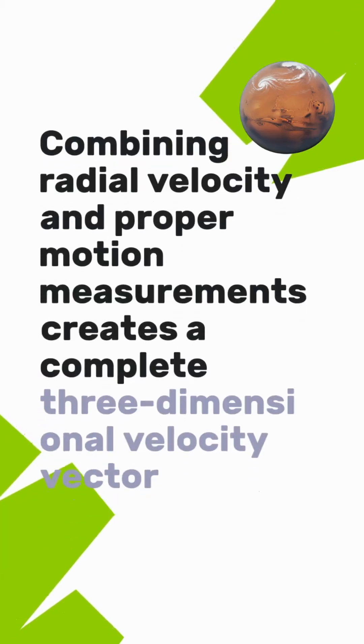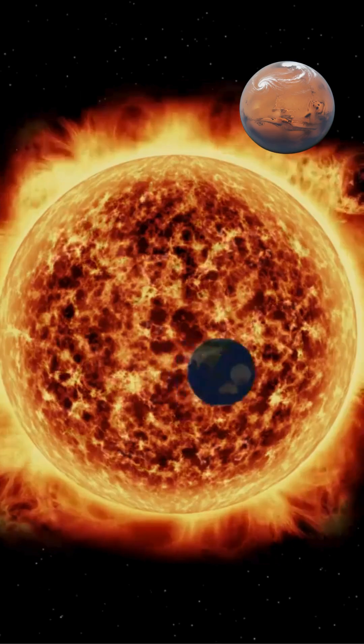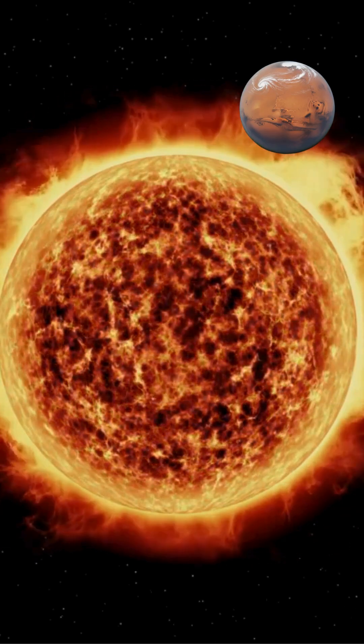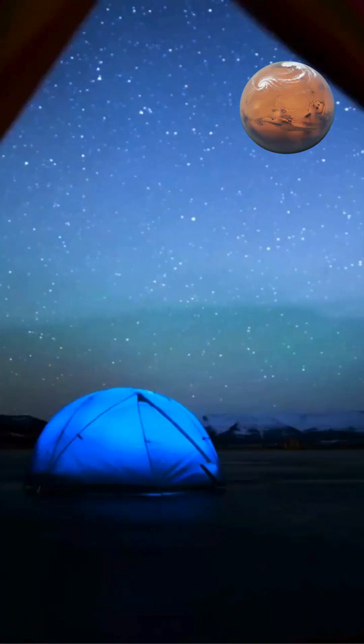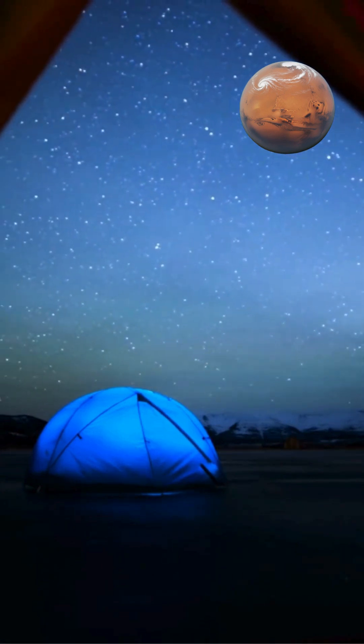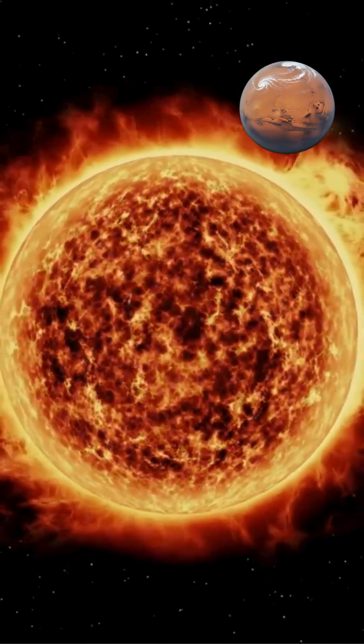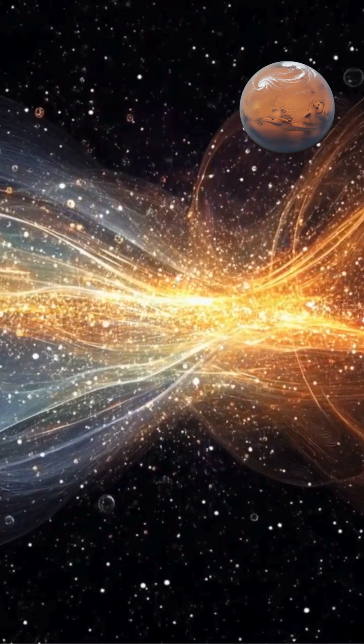Combining radial velocity and proper motion measurements creates a complete three-dimensional velocity vector showing exactly how fast each star moves through space and in what direction. This comprehensive data reveals stars escaping from binary systems, stars orbiting galactic centers, and stars expelled from clusters by gravitational encounters.